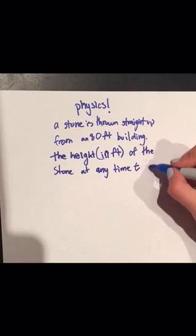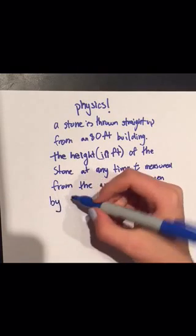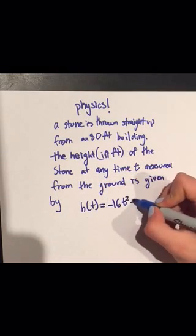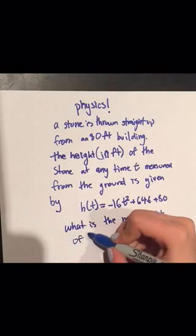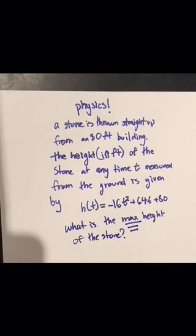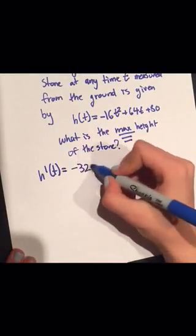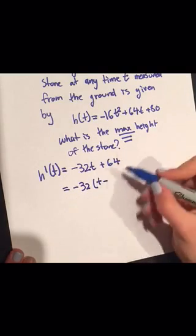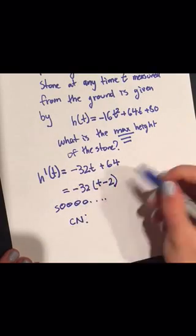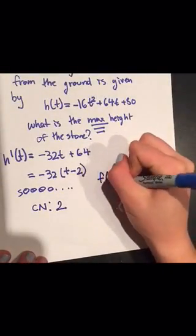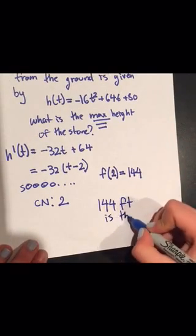Now we are going to apply this to physics. A stone is thrown straight up from an 80-foot building. The height in feet of the stone at any time t measured from the ground is given by h(t) = −16t² + 64t + 80. What is the maximum height of the stone? Our first step is to take the derivative of h(t), which is −32t + 64. When we factor that, it becomes −32 times the quantity (t − 2), so the critical number is t = 2. Plugging that back into the equation, f(2) = 144. So 144 feet is the maximum height of the stone.